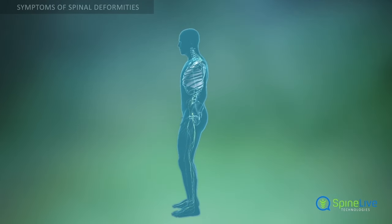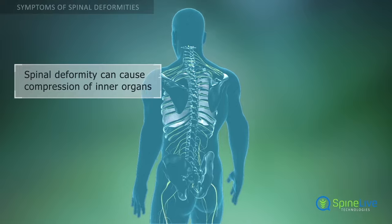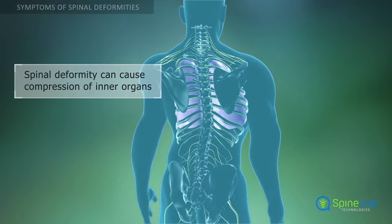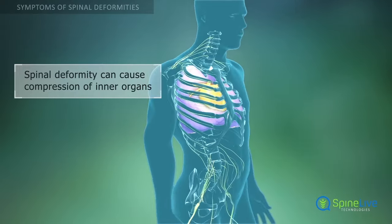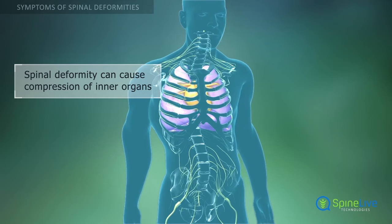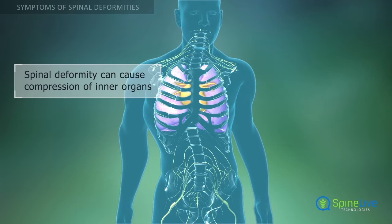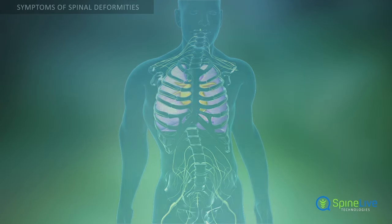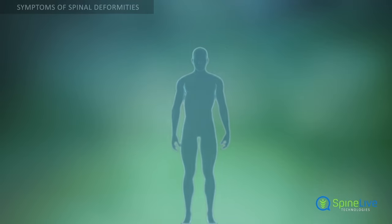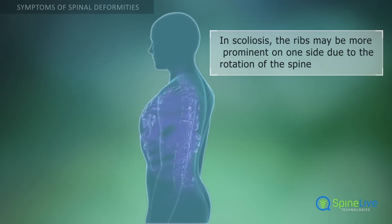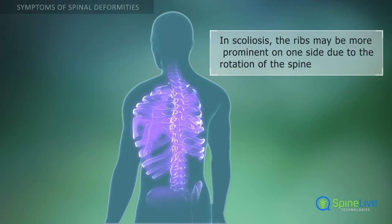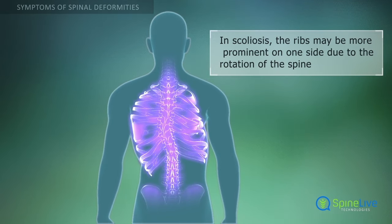Sometimes spinal deformity can cause compression of inner organs and disorders of their functions. In severe cases, it can affect your lungs, heart, nerves, and other tissues. Some symptoms occur only with certain types of spinal deformities.